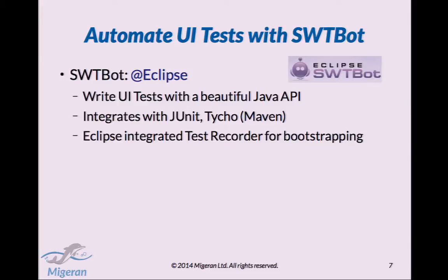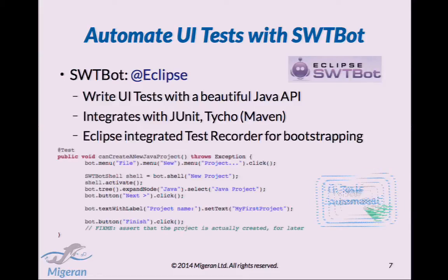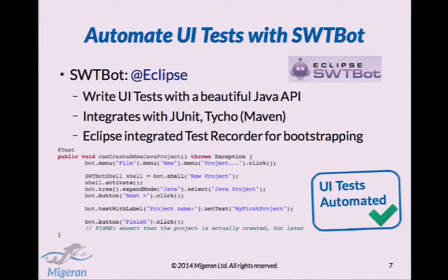So we started using SWTBot. SWTBot is an Eclipse project. For those who don't know SWTBot, you can write UI tests with a beautiful Java API. It integrates great with JUnit and Tycho, and it also includes an integrated test recorder that you can use to start building tests quickly. But usually in our experience, once you know the API, it's much faster to build tests by hand instead of using the test recorder, because the output of the recorder has to be customized anyway. So our UI tests are now automated and we build them by the hundred.